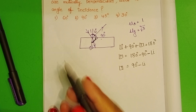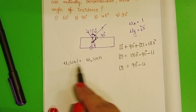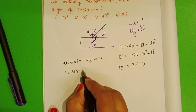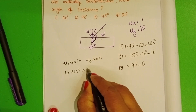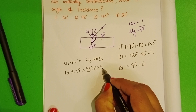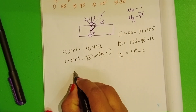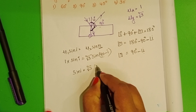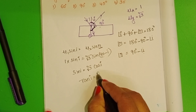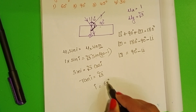Taking Snell's law at this surface: μ₁ sin I = μ₂ sin r. The first medium is air and the second medium is glass. So 1 × sin I = √3 × sin(90 − I). Since sin(90 − θ) = cos θ, this becomes sin I = √3 cos I. Dividing both sides, tan I = √3. Since tan 60° = √3, the angle of incidence is 60 degrees.